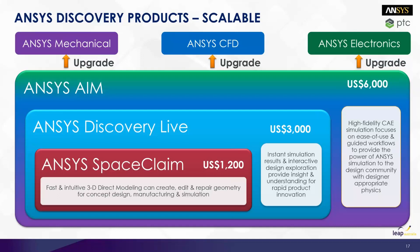If you wanted just SpaceClaim, you can get that for US$1,200. But if you buy a Discovery Live subscription, you will get SpaceClaim included. And if you want to extend the capability of Discovery Live and have more physics such as sliding contact and other things within CFD, you can get Ansys AIM, which will include Discovery Live and SpaceClaim for a slightly higher subscription fee.